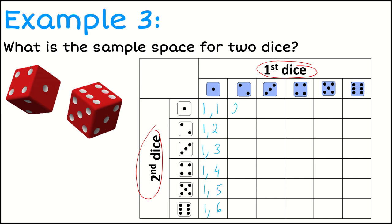If I extend that, well on this first dice, I could get a 2, I could get a 3, I could get a 4, I could get a 5, I could get a 6. So you'll notice that the first number I write is the number I could get on my first dice, and the second number I write is the number I get on my second dice.